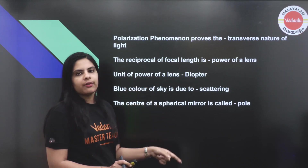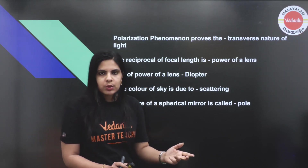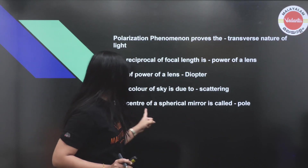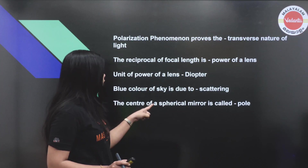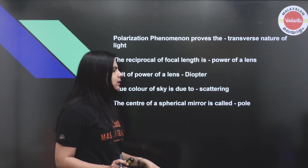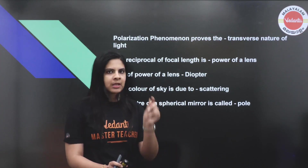The blue color of the sky is due to scattering. The center of a spherical mirror is called the pole.